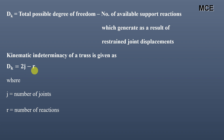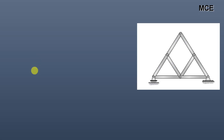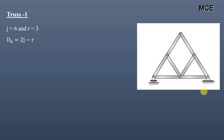For truss one, this truss has six joints — one, two, three, four, five, and six — and three reactions: one at the roller and two at the pin support. So j = 6 and r = 3, giving dk = 9. This means this truss is kinematically indeterminate to nine degrees, or has nine degrees of freedom.